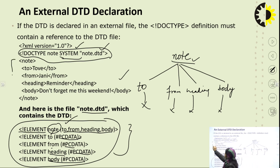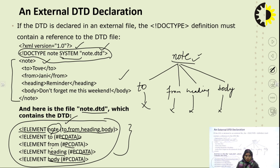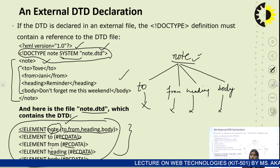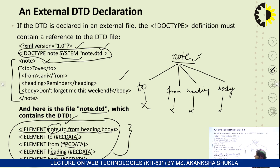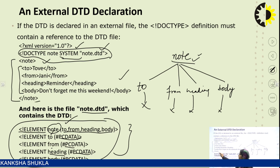The next part is the XML document. As per the tree structure, the root node is 'node'. Open the node tag — inside it we have four elements: to, from, heading, and body. Open each respective tag, pass the values, and correspondingly close each tag. Finally, the node tag — which is the root node — is closed.